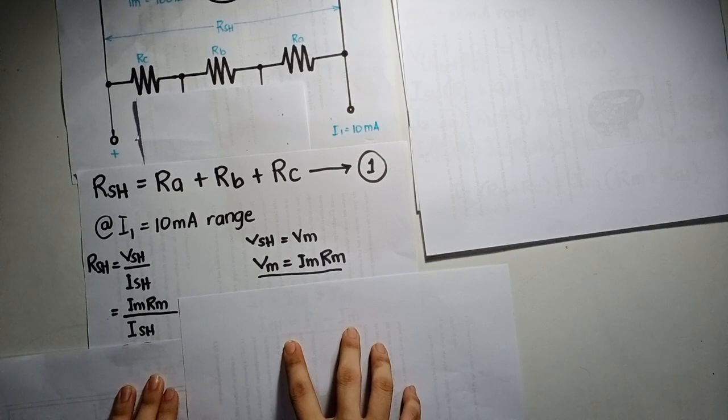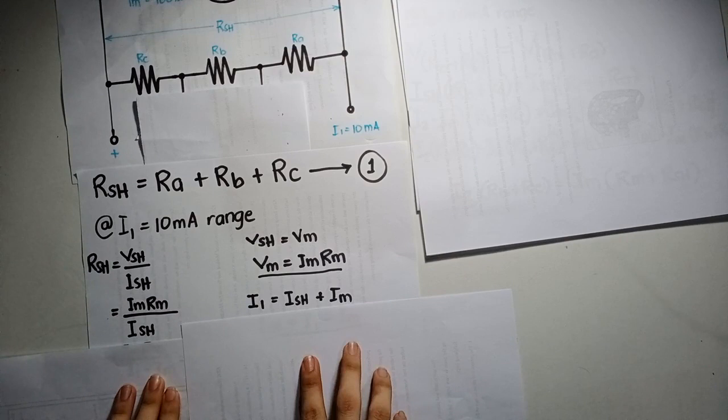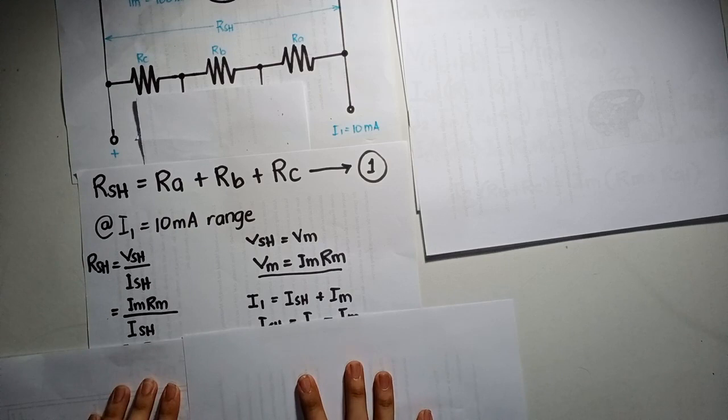Since we don't have the value for ISH, based on the circuit, I1 is the summation of ISH plus Im. So, we can derive to the formula of ISH, which is I1 minus Im.